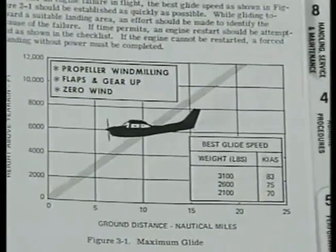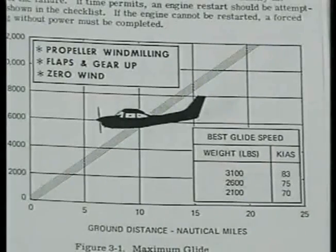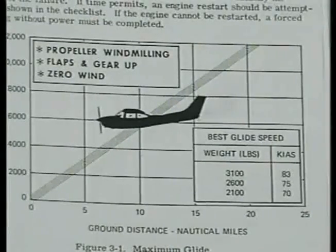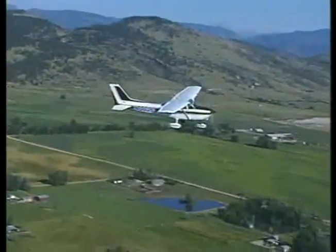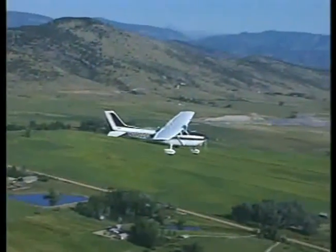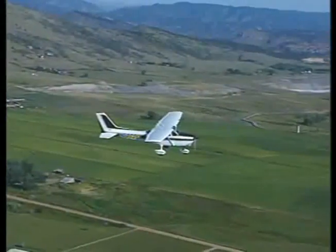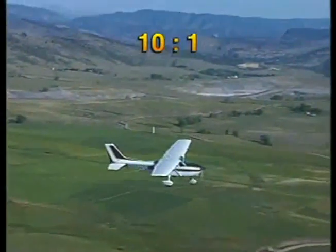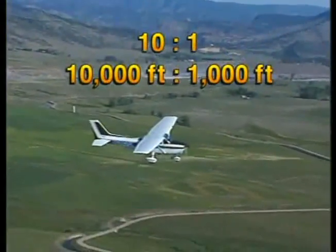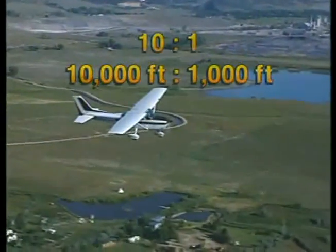For example, the best glide speed for this airplane at 2,600 pounds is 75 knots with the propeller windmilling, flaps and gear up in calm wind conditions. Glide ratio represents the distance an airplane will travel forward without power in relation to altitude loss. A glide ratio of 10 to 1 means an airplane will travel approximately 10,000 feet of horizontal distance for every 1,000 feet of altitude lost.